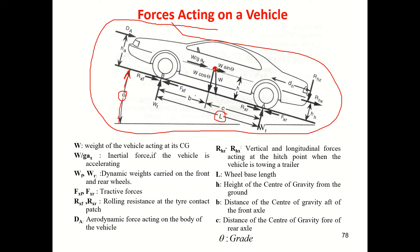The center of gravity is at a distance B from the front axle and at a distance C from the rear axle. The center of gravity is at a height h from the ground. These are the vehicle dimensions.